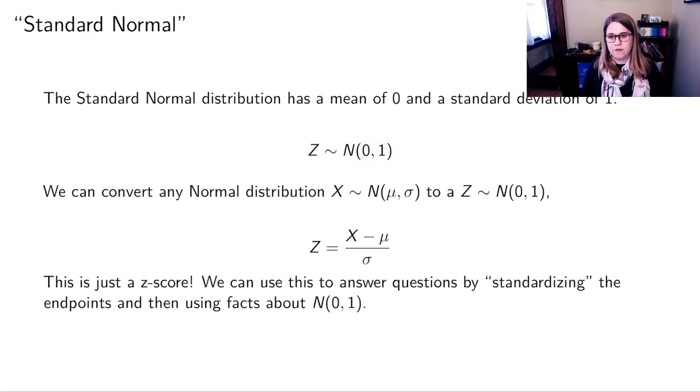We can convert any normal distribution with any arbitrary mean and standard deviation to a standard normal just by doing x minus mu over sigma. Basically, we just make a z-score. We do our x minus the mean divided by the standard deviation. We can use this to answer questions by standardizing, moving from our data distribution to the standard normal, and then using facts that we might know about the standard normal.